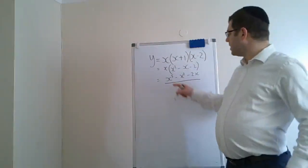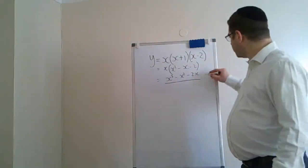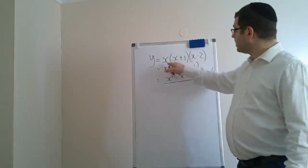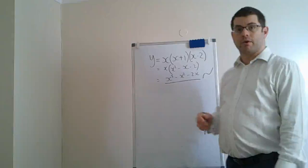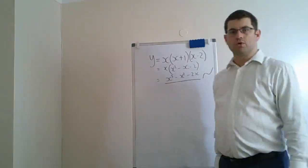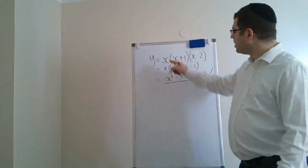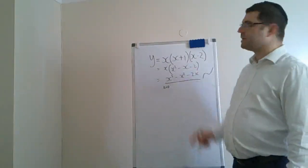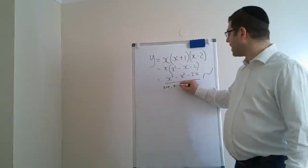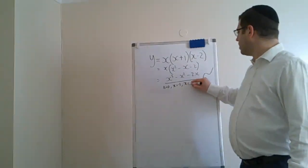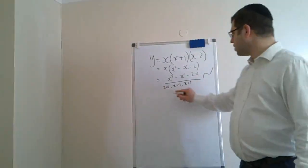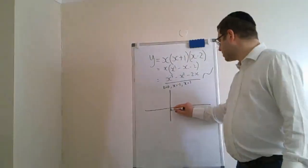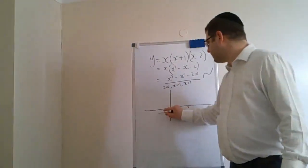We can see it's a positive cubic. From the factorisation, if you set each factor to zero you get the roots — that's what we do when we set y = 0. So x = 0 gives a root at x = 0; the (x + 1) bracket gives x = −1; and the (x − 2) bracket gives x = 2. The graph looks like this.